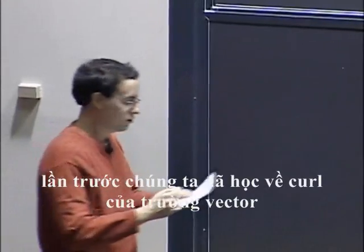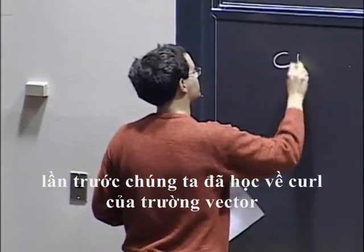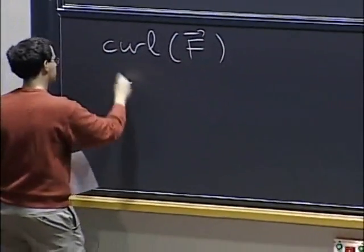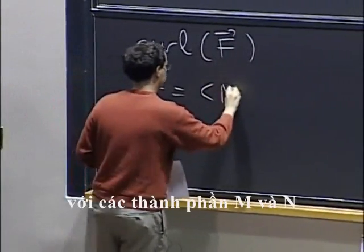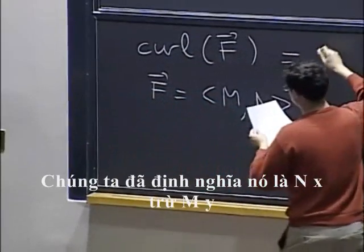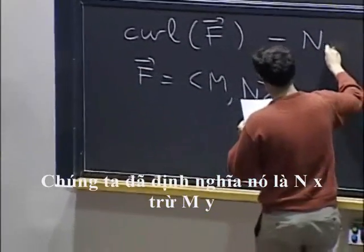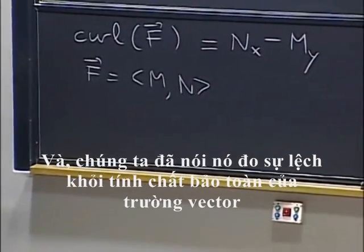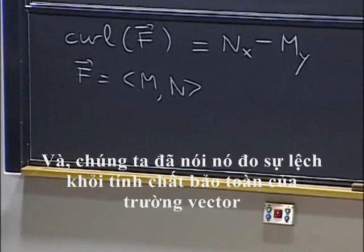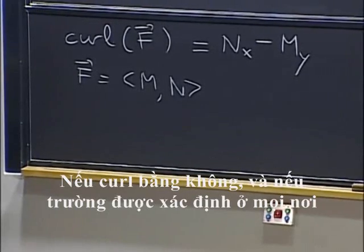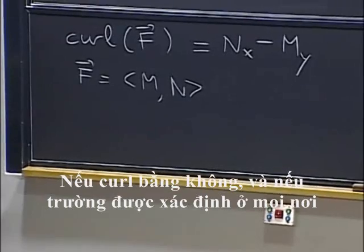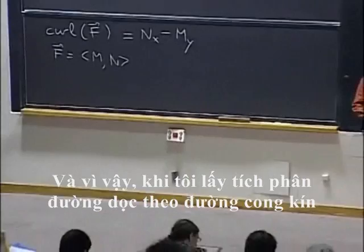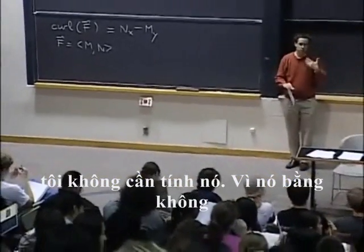Last time we saw the curl of a vector field with components M and N. We defined that to be N sub x minus M sub y. And we said this measures how far that vector field is from being conservative. If the curl is zero and if the field is defined everywhere, then it's going to be conservative. So when I take a line integral along a closed curve, I know it's going to be zero.